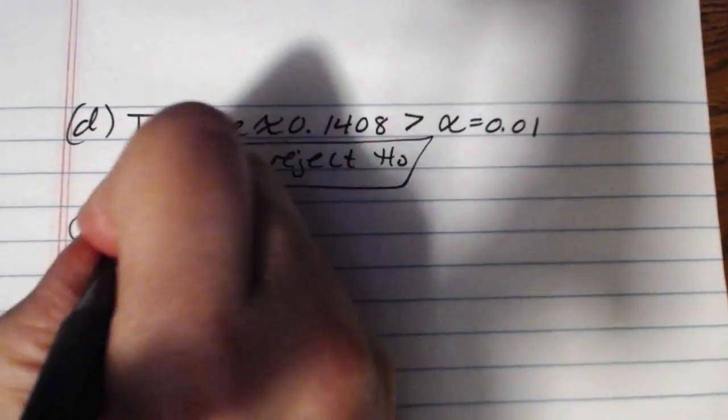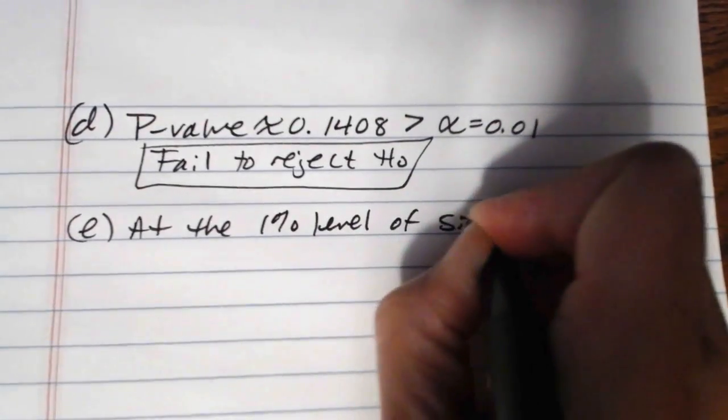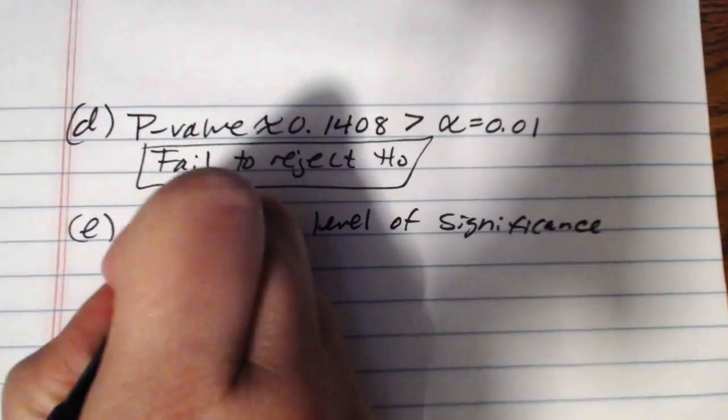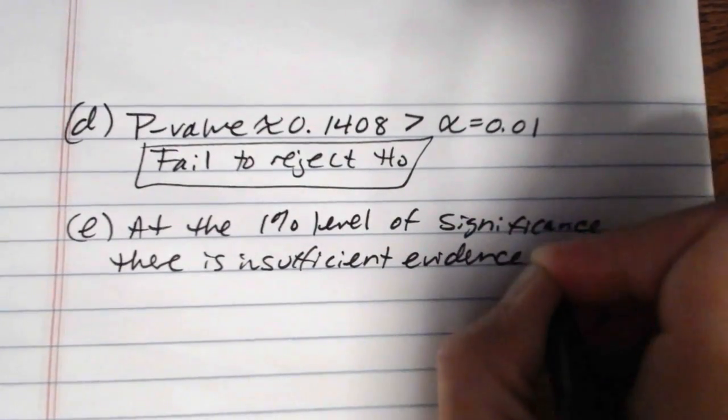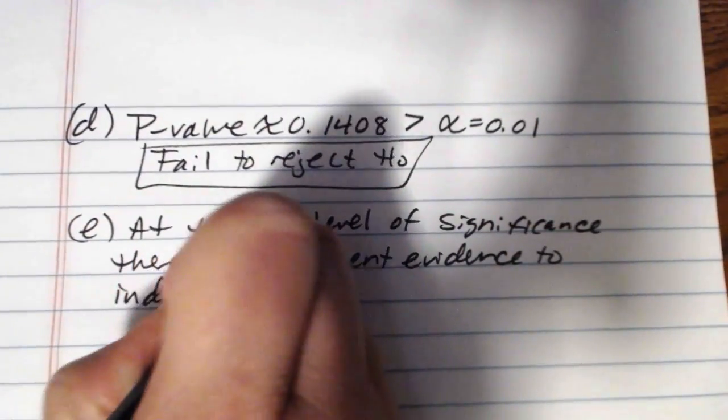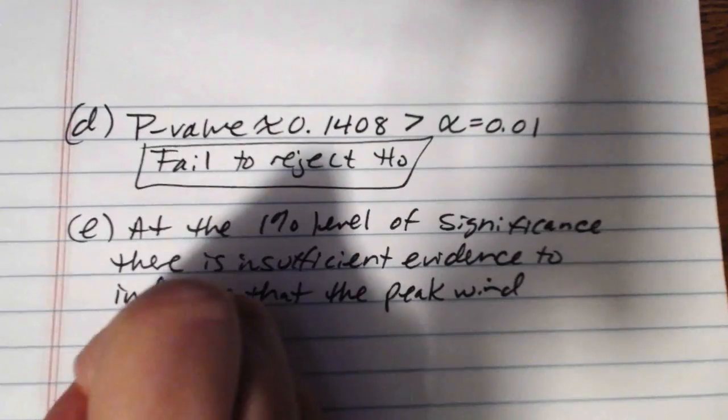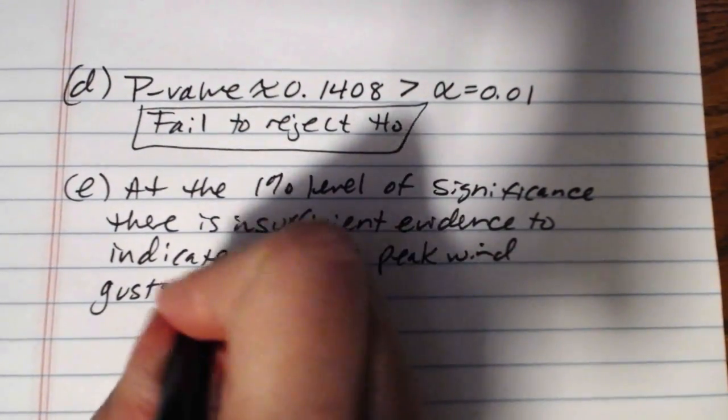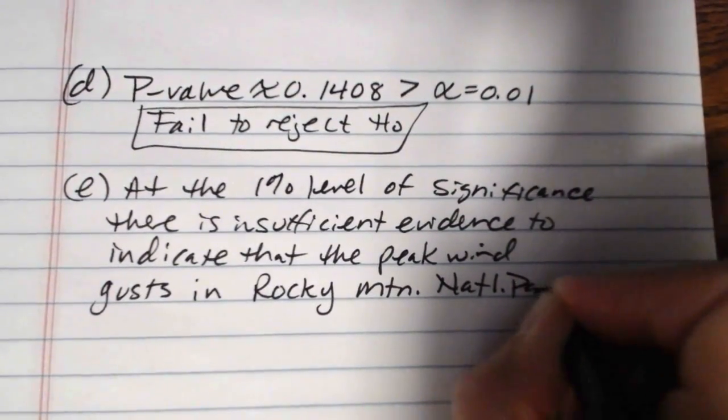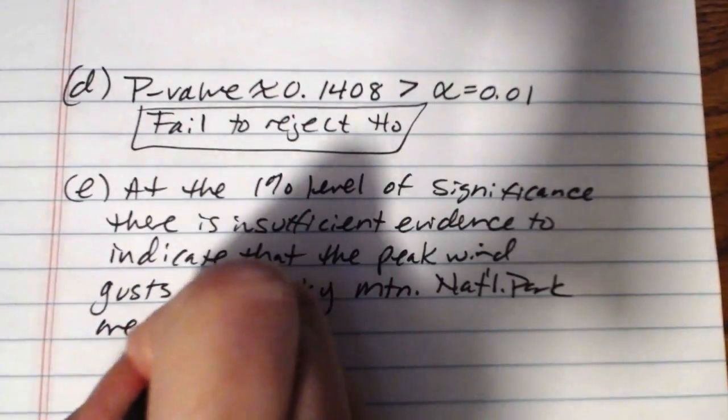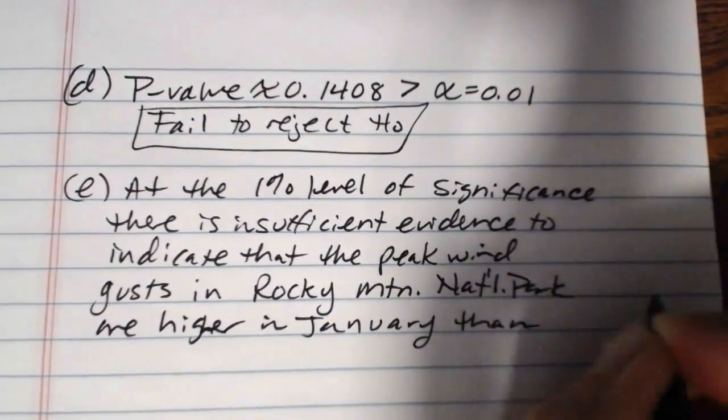And in context, what that means is at the 1% level of significance, there is insufficient evidence to indicate that the peak wind gusts in Rocky Mountain National Park are higher in January than in April.